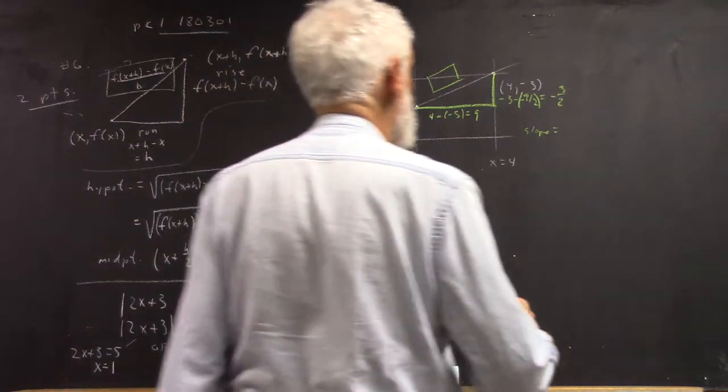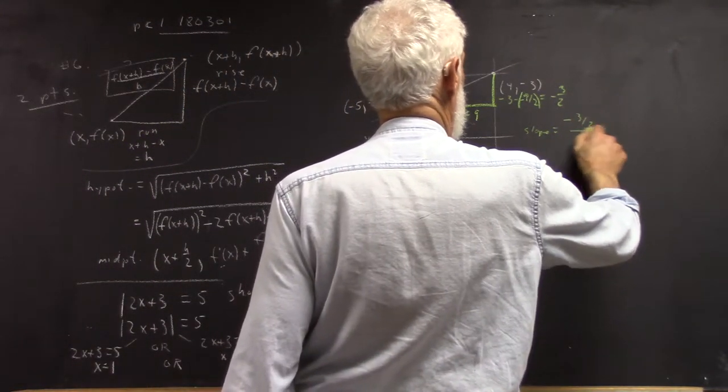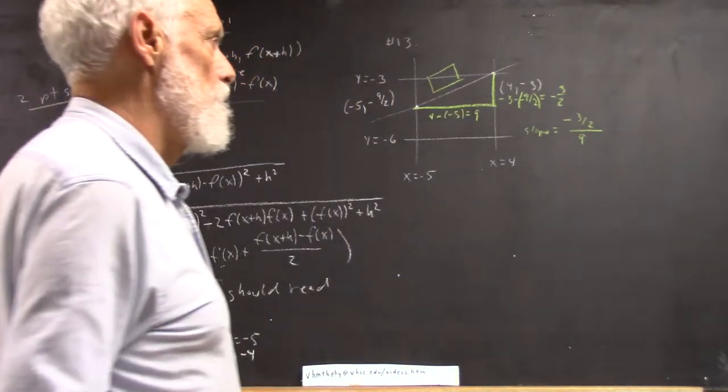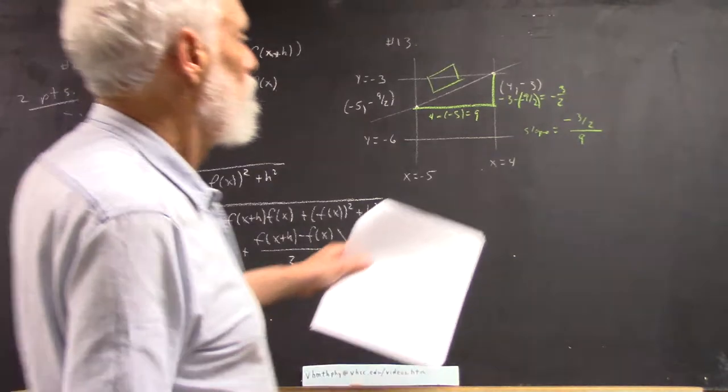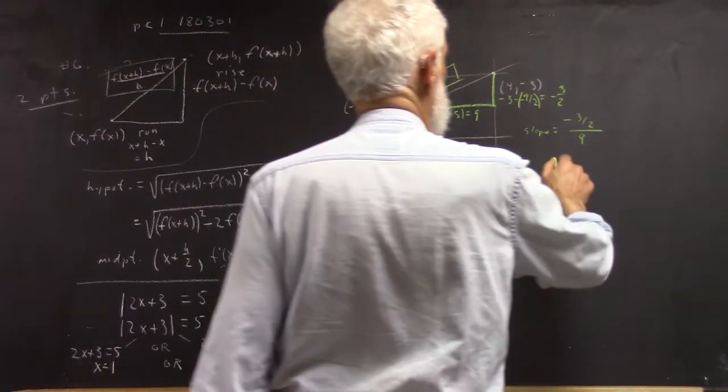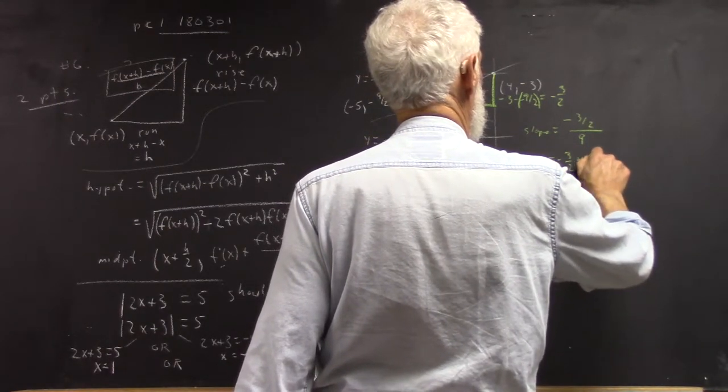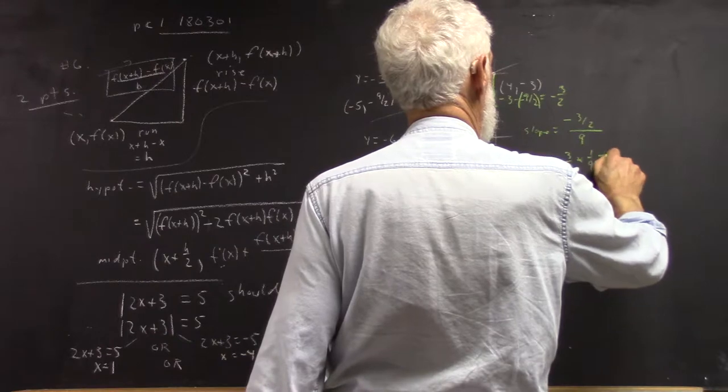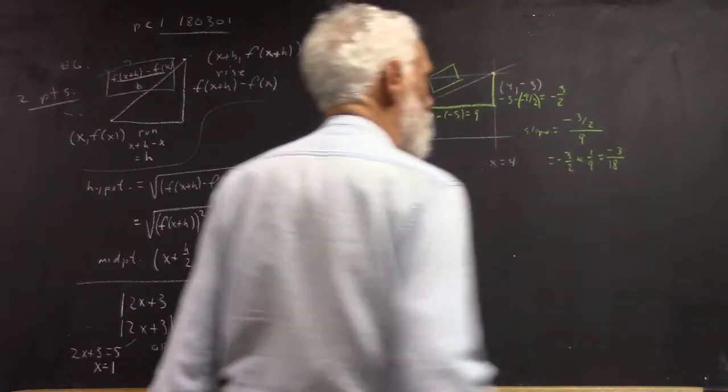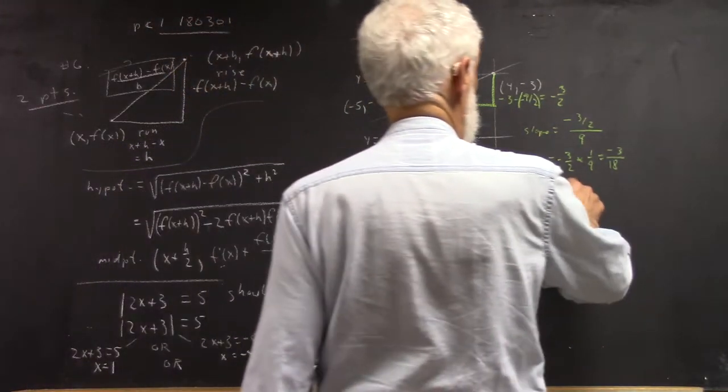So when you do that, when you multiply... I'm sorry? When you multiply the 9 times 3, 3 halves. Like 1 over... Yeah, well, I'll write it out. Negative 3 halves over 9, right? Yeah. Which means... Okay? That would be 1 over 6. Yeah. Negative 1 over 6.